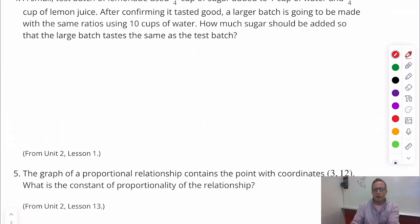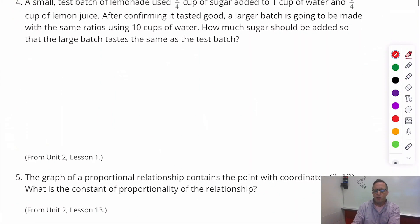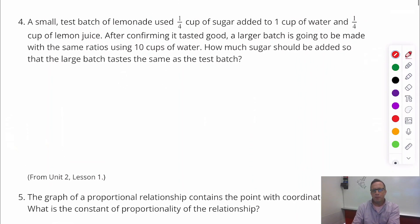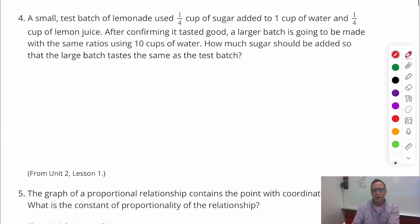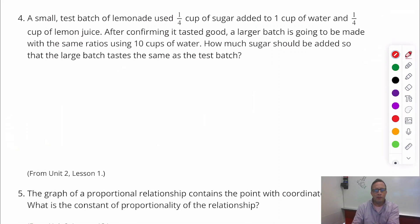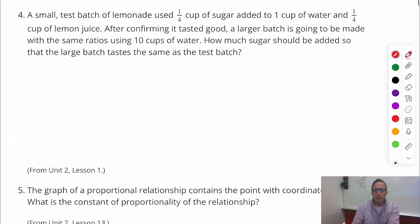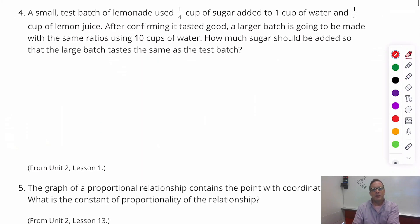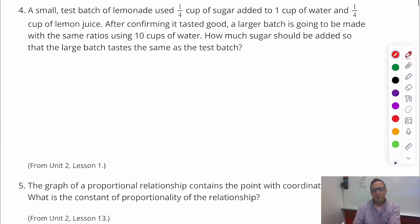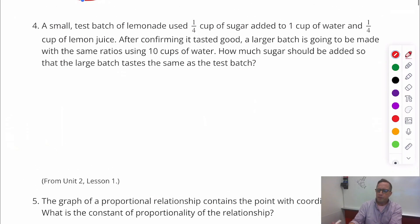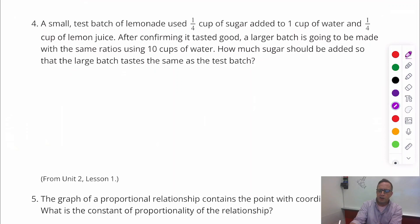Alright. Number four. A small test batch of lemonade used a fourth cup of sugar added to one cup of water and one fourth cup of lemon juice. After confirming that it tasted good, a larger batch is going to be made with the same ratios using ten cups of water. How much sugar should be added so that the large batch tastes the same as the test batch? Well, this is a pretty easy scale factor right here because in the original batch, only one cup of water was used, and in the new batch, they're using ten cups.